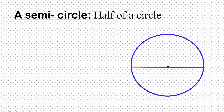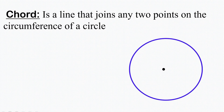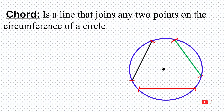The next terminology is chord. When we talk of a chord, we are talking about a line that joins any two points on the circumference of a circle. So if we have a circle, any line that joins two points on the circumference is a chord. You can have this line, or this line — any line of this form that joins two points on the circumference is what we call a chord.